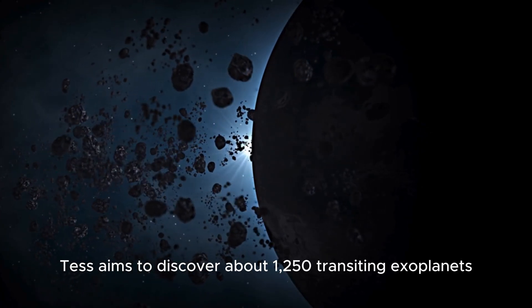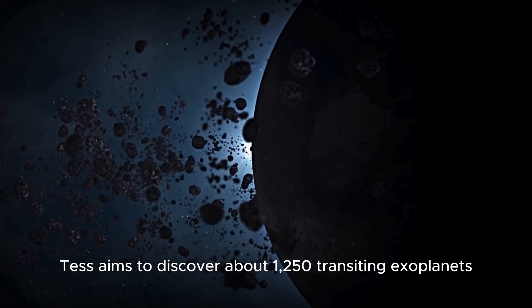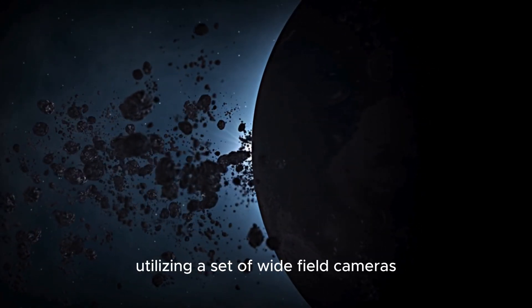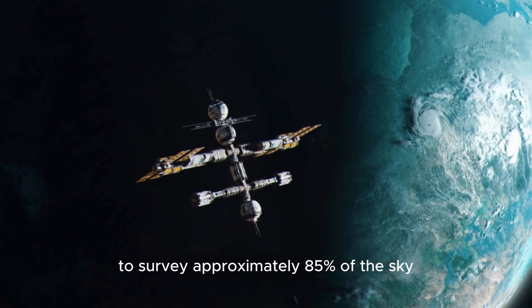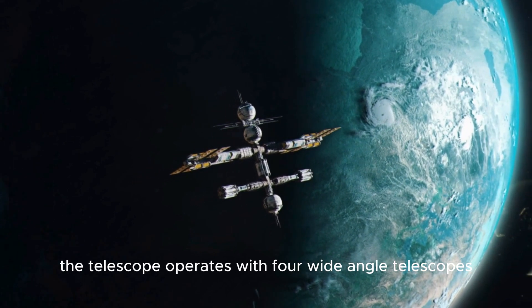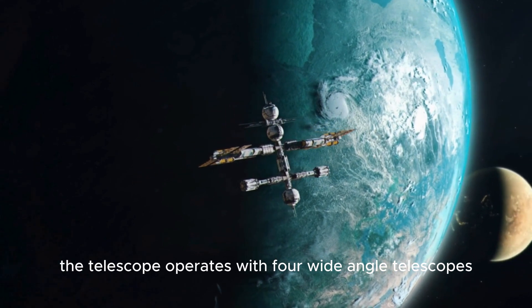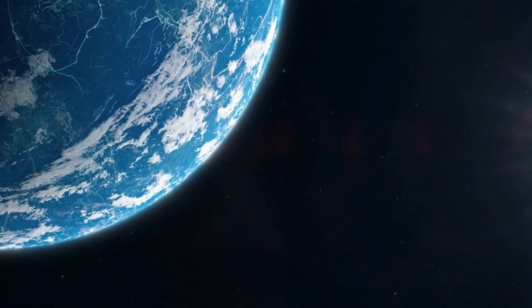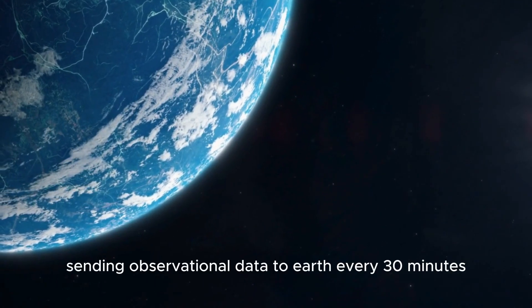TESS aims to discover about 1,250 transiting exoplanets orbiting designated stars, utilizing a set of wide-field cameras to survey approximately 85% of the sky. The telescope operates with four wide-angle telescopes and charge-coupled device, CCD detectors, sending observational data to Earth every 30 minutes.